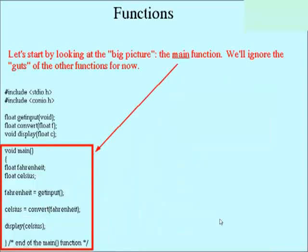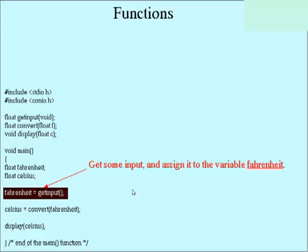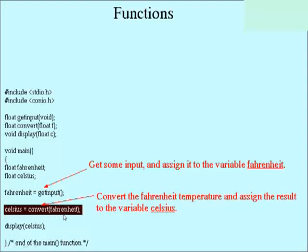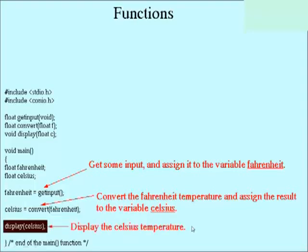So let's look at the big picture of the main function. We'll ignore the guts of the other functions for now. Well, you already know about variable declarations inside of main. So here we have a function that says get the input and assign it to a variable called Fahrenheit. Here's a function that says convert the Fahrenheit value into Celsius. So take Fahrenheit, convert it, and assign the result to Celsius. And here's something that says display the result in Celsius. Notice that with some good names here, I don't even have to put any comments. It's self-documenting code.